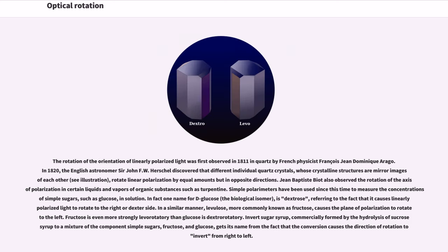The rotation of the orientation of linearly polarized light was first observed in 1811 in quartz by French physicist François-Jean Dominique Arago. In 1820, the English astronomer Sir John F.W. Herschel discovered that different individual quartz crystals, whose crystalline structures are mirror images of each other, rotate linear polarization by equal amounts but in opposite directions.